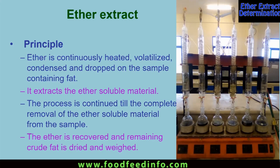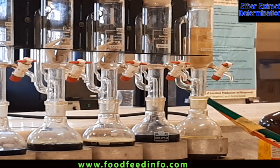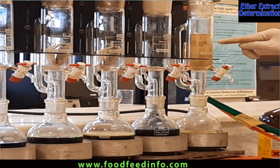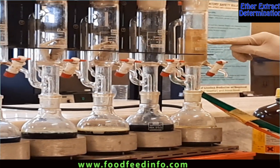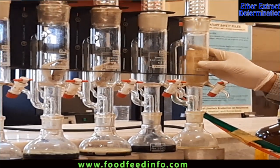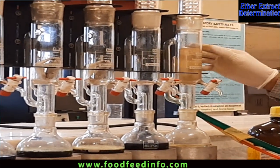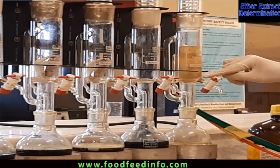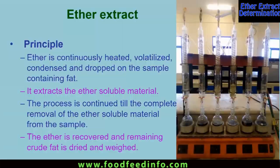Briefly, ether is continuously heated, volatilized, condensed, and dropped on the sample. This process continues until all of the fat has been extracted. At the end, we get the fat dried in an oven and then we weigh that amount of fat.